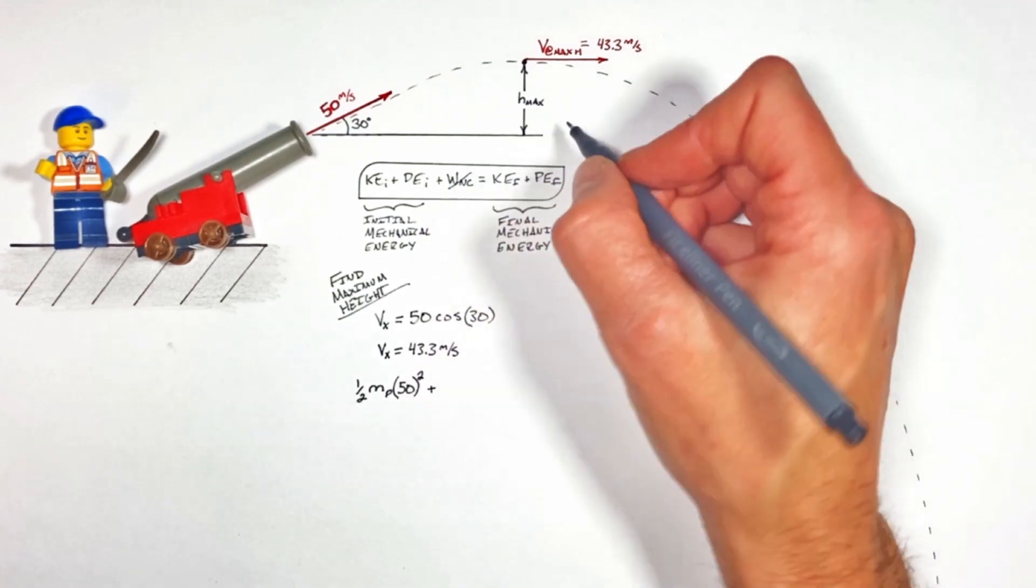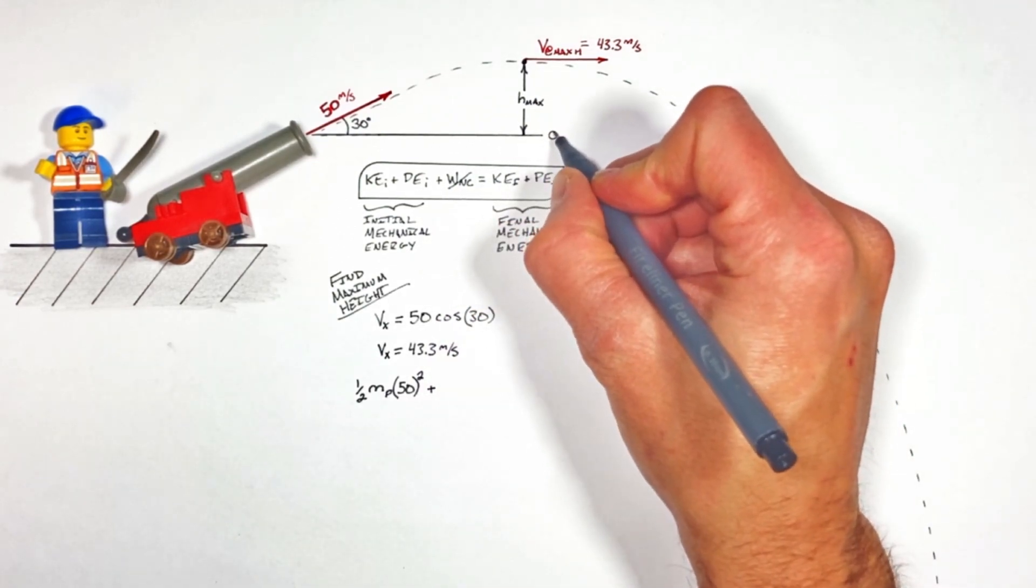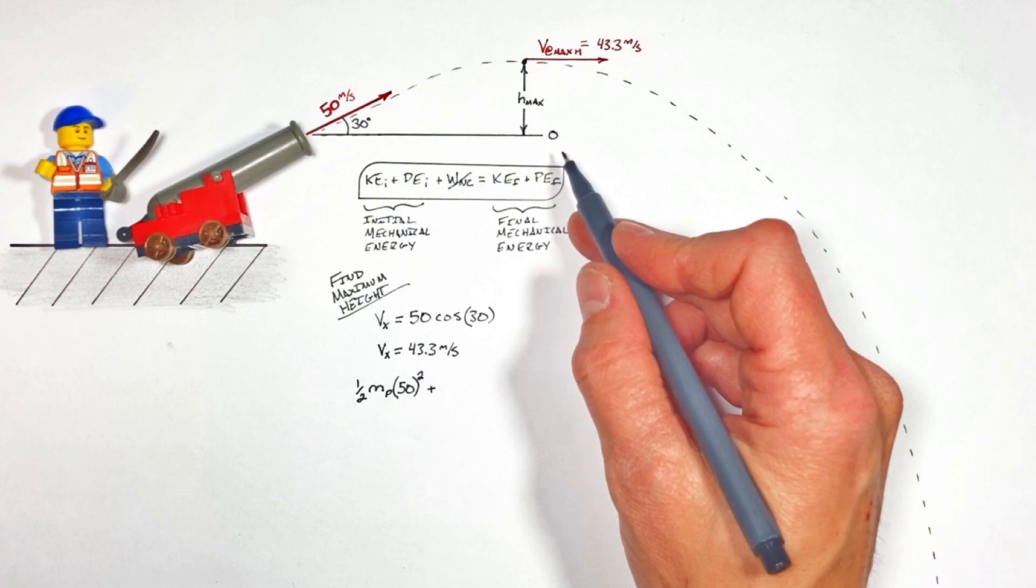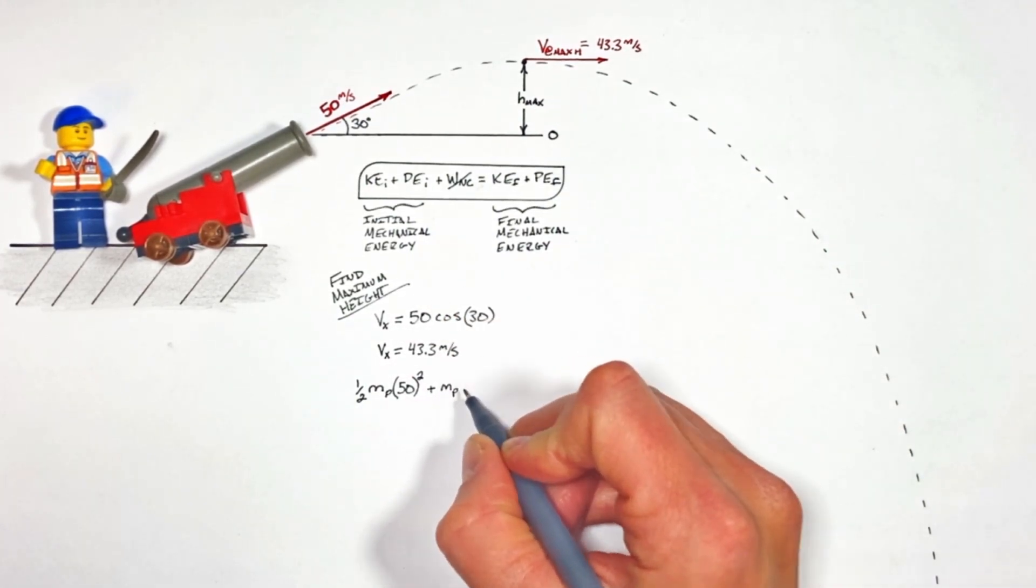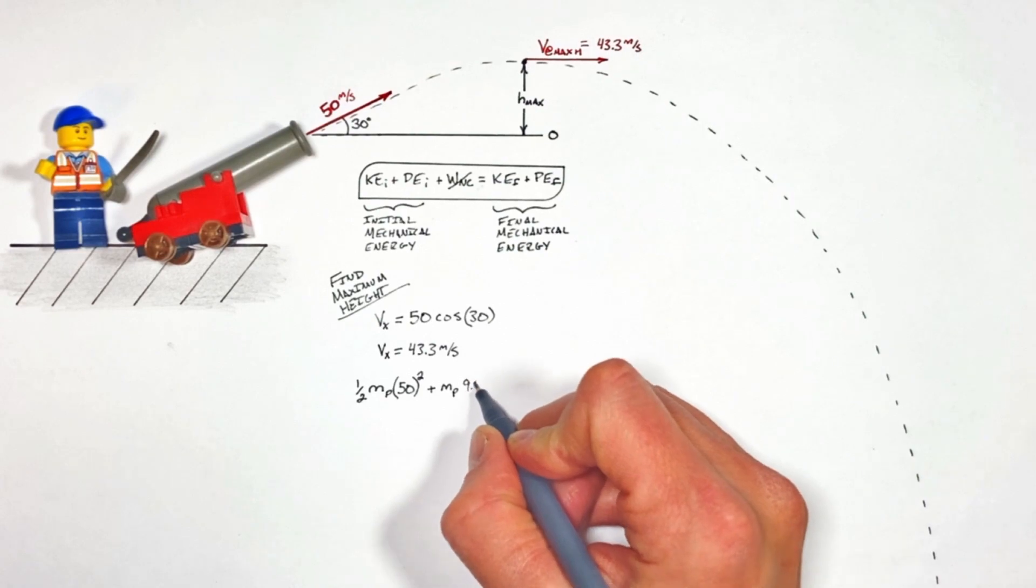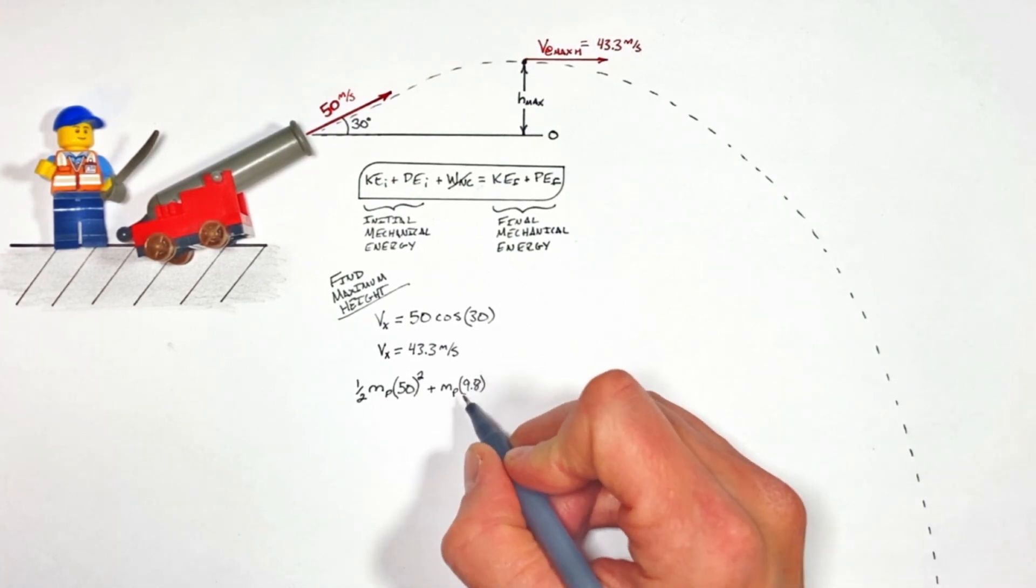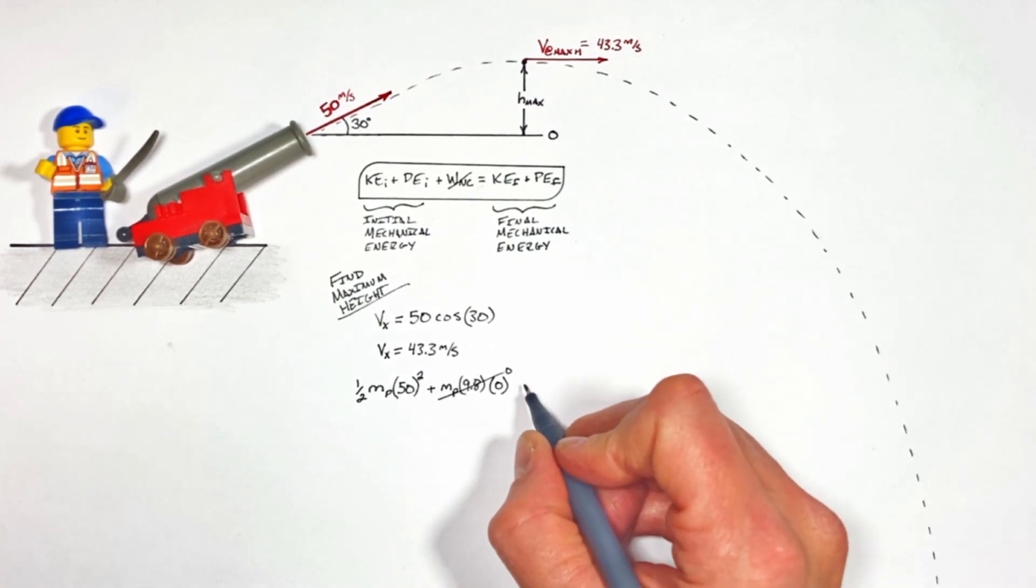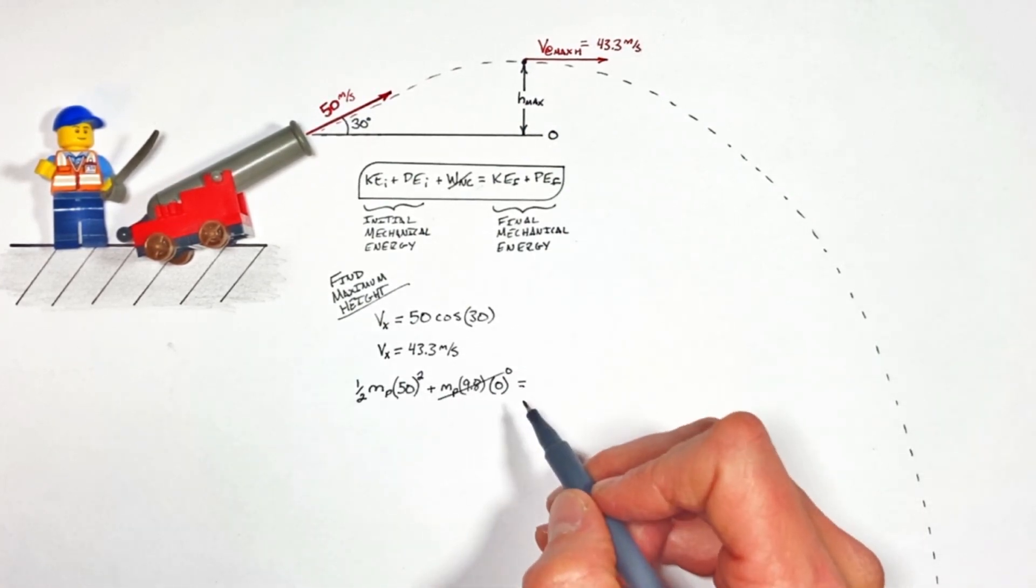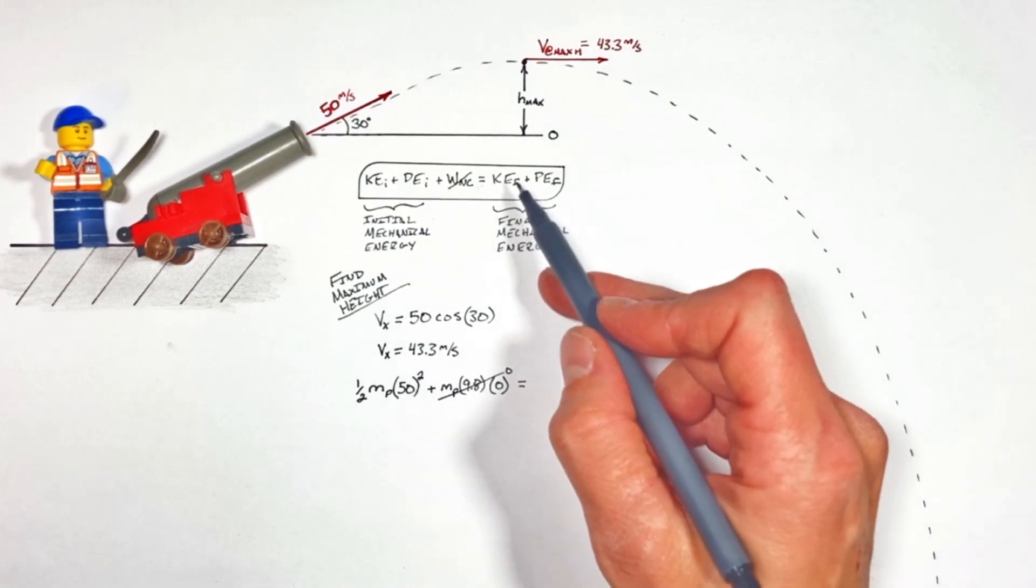Let's say that the initial height of this projectile is a height of zero, meaning the initial gravitational potential is going to be the mass of the projectile times g (that's 9.8) times the initial height (that's zero), which makes that whole term zero. Now we're going to set that equal to the final kinetic energy.